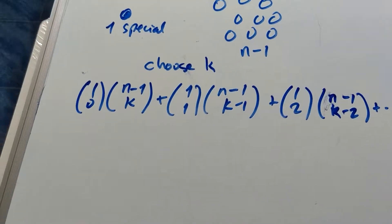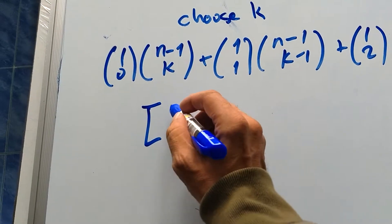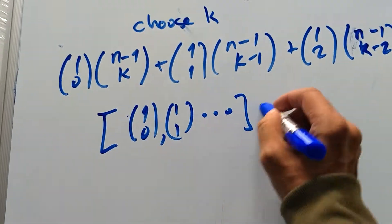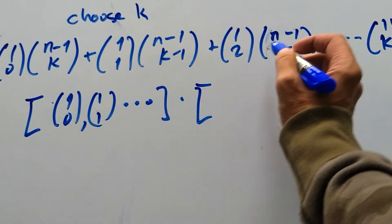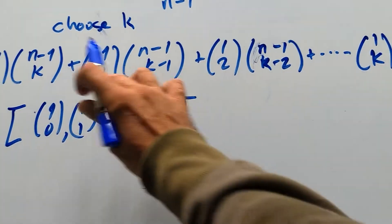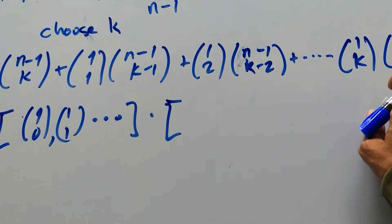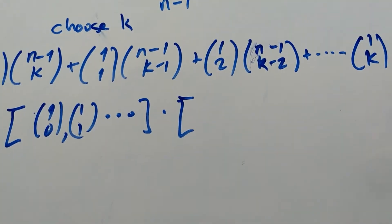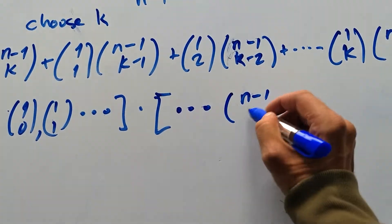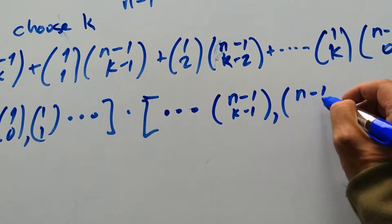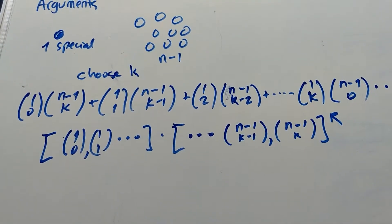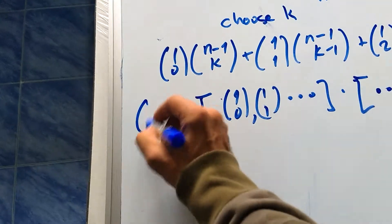So let me write this as a vector: (1 choose 0), (1 choose 1), dot dot dot. And I want to write it in the way it appears in Pascal's triangle, so I have to reverse all of this. I get dot dot dot, N minus 1 choose K minus 1, N minus 1 choose K. That's how it appears in Pascal's triangle. And this equals N choose K.